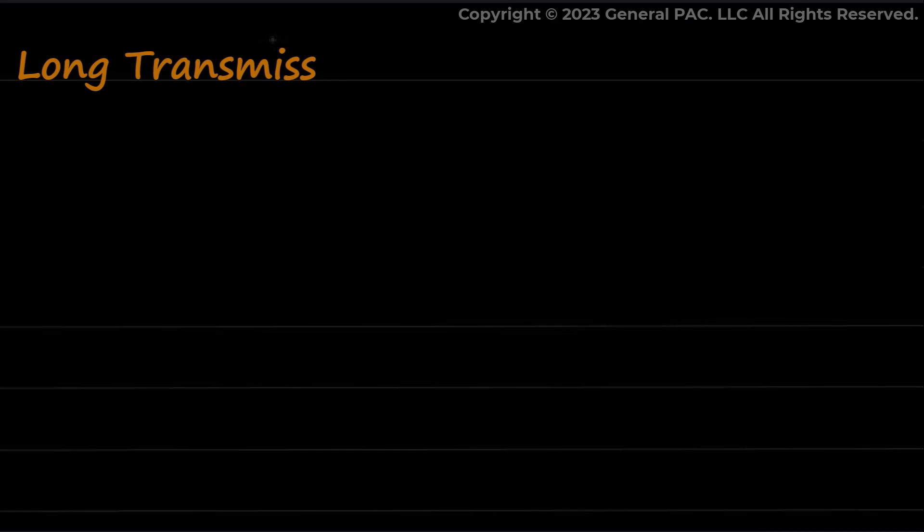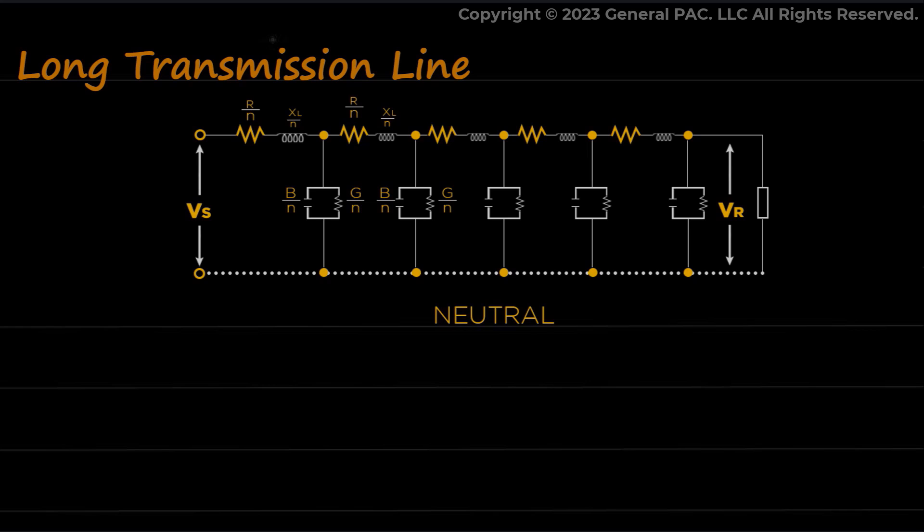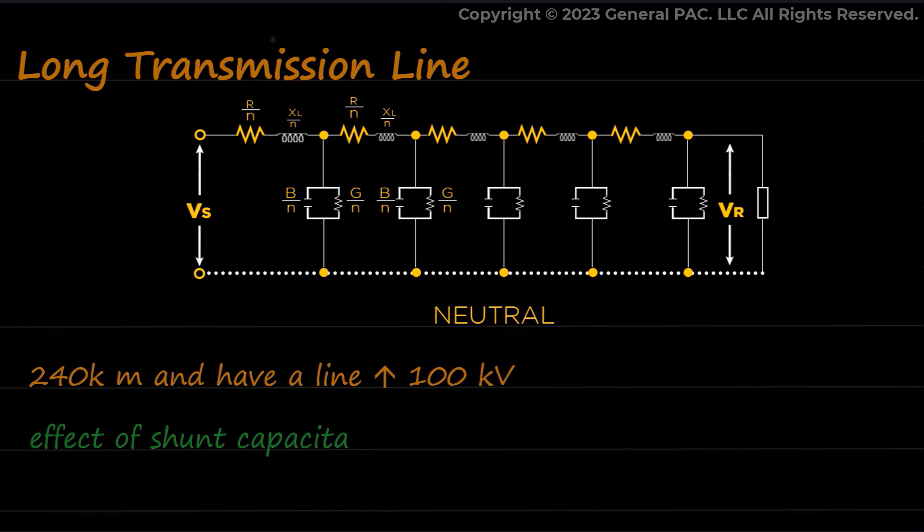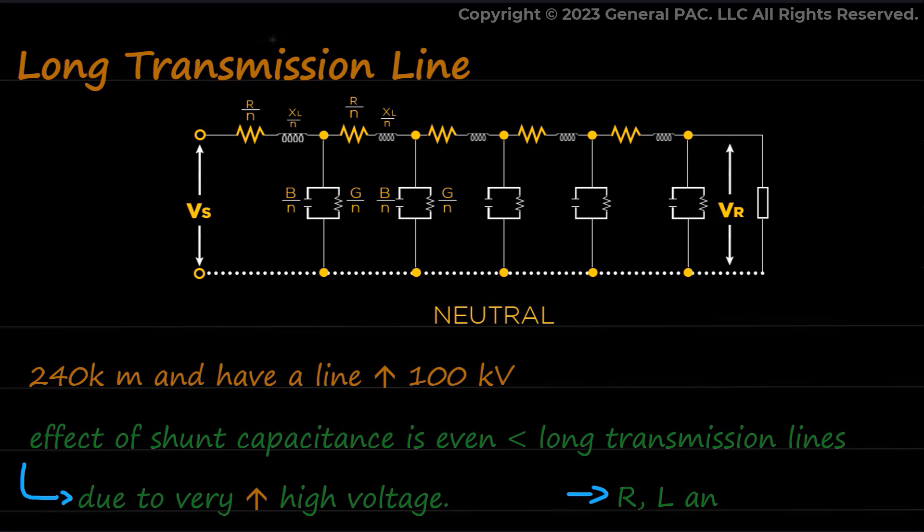Long transmission line. Moving on, we have transmission lines which are longer than 240 km and have a line voltage higher than 100 kV. They are modeled as long transmission lines. The effect of shunt capacitance is even greater in long transmission lines due to very high voltage. The constants R, L, and C are now distributed uniformly throughout the transmission line.